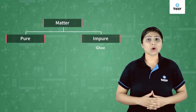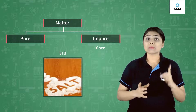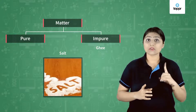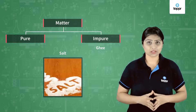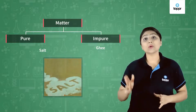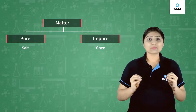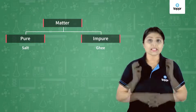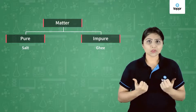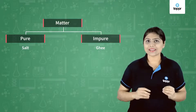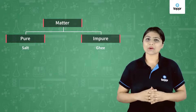Let's take the example of salt. When you check salt, it is just made up of one kind of particle and all the particles look the same — they have the same texture. So salt is said to be a pure matter. Anything that is just made up of one kind of particle is called pure matter. Remember the line 'dana dana eggs aman' for salt? That means it is a pure matter.